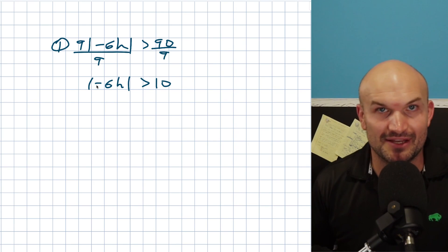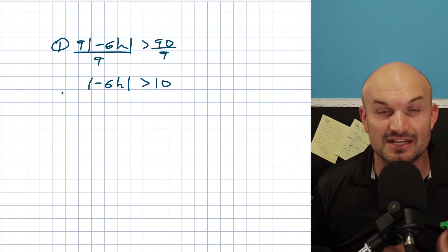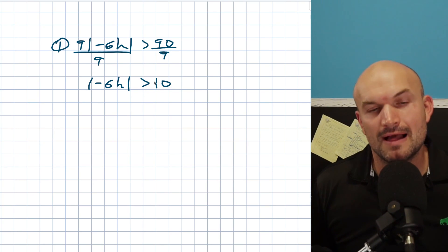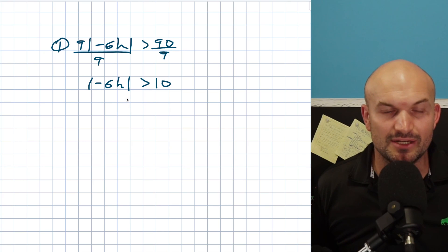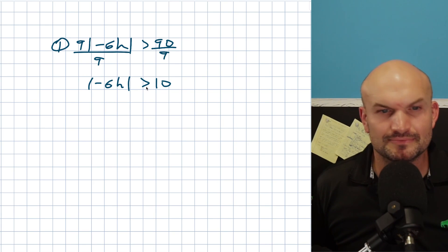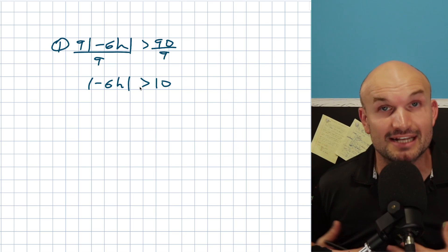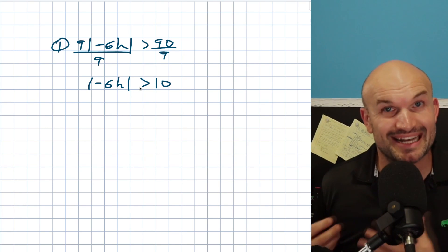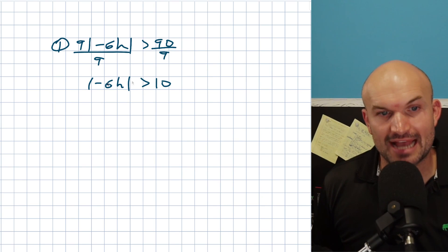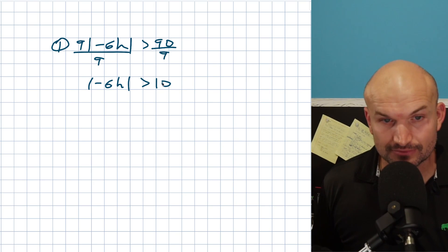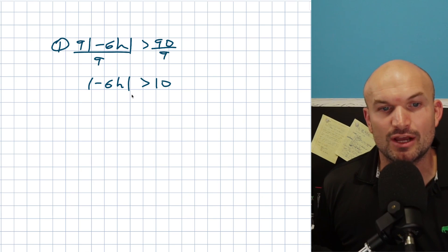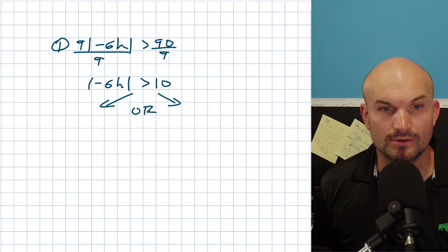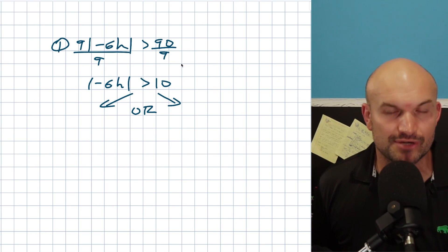We need to take into account the positive as well as the negative case. When we're dealing with absolute value inequalities, that's going to convert them into what we call a compound inequality, which is either going to be an AND or an OR. Whenever you have the absolute value greater than a value, that is going to create an OR inequality. If it's less than or less than or equal to, it's going to be an AND.